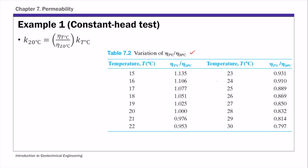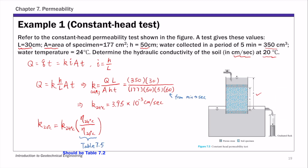Our temperature is 24 degrees C, so the ratio from Table 7.2 is 0.910. Therefore, K at 20 degrees C equals 3.95 times 10 to the negative 3 times 0.91, giving a final hydraulic conductivity at 20 degrees C of 3.59 times 10 to the negative 3 centimeters per second.